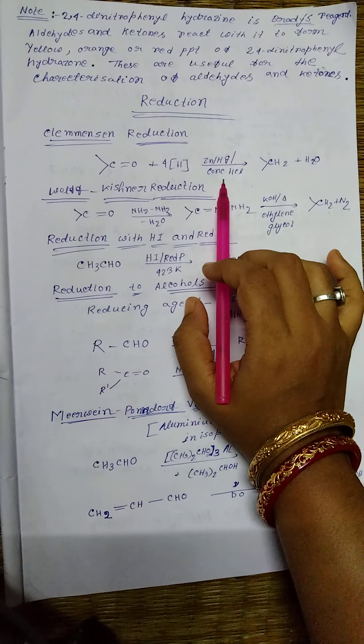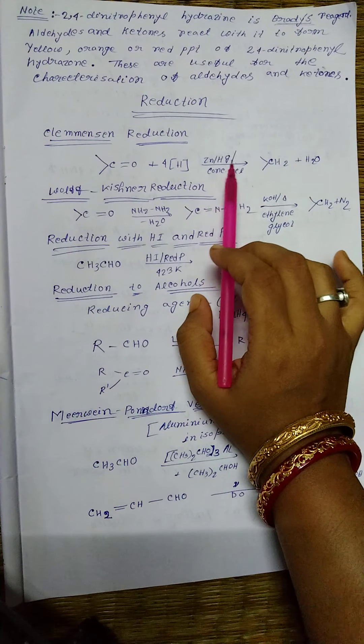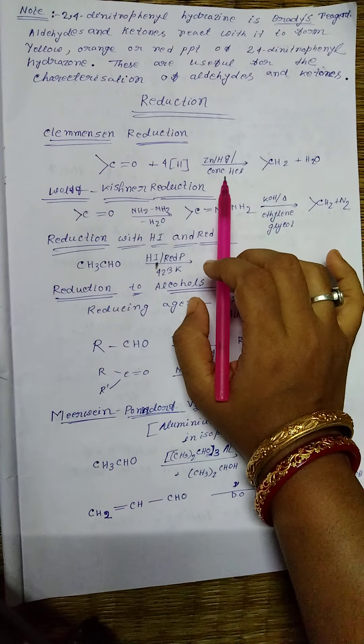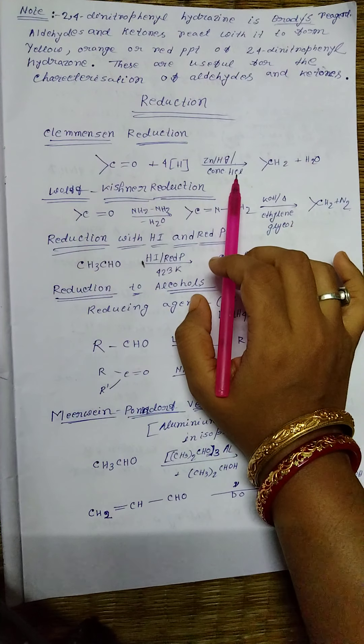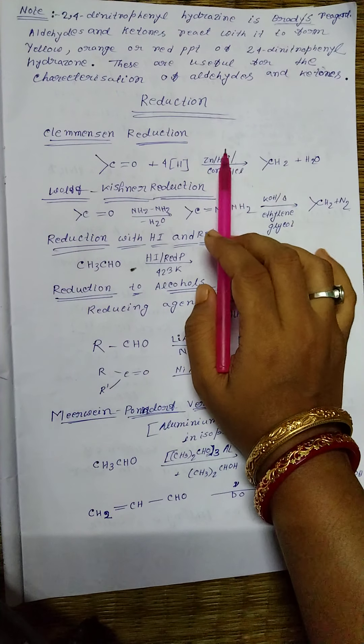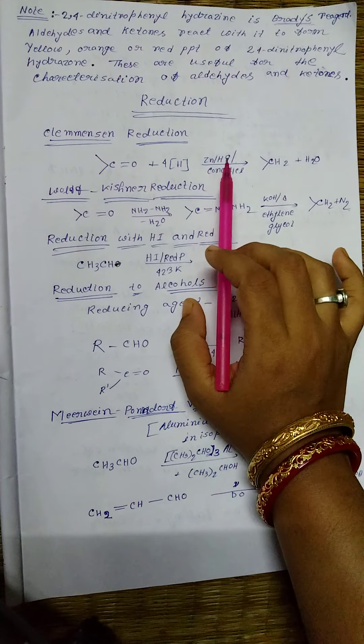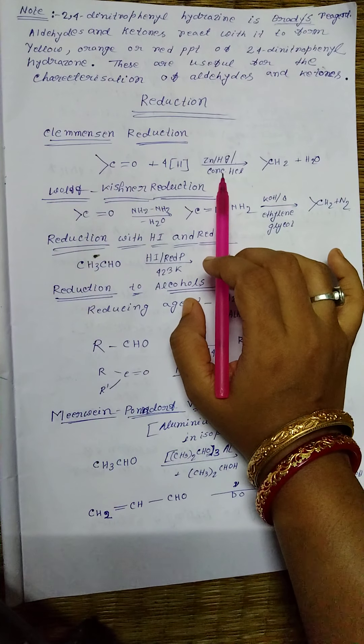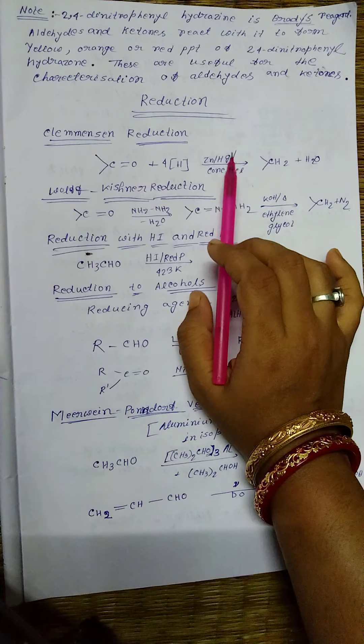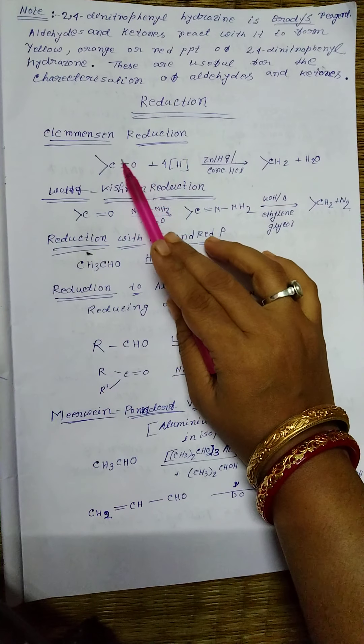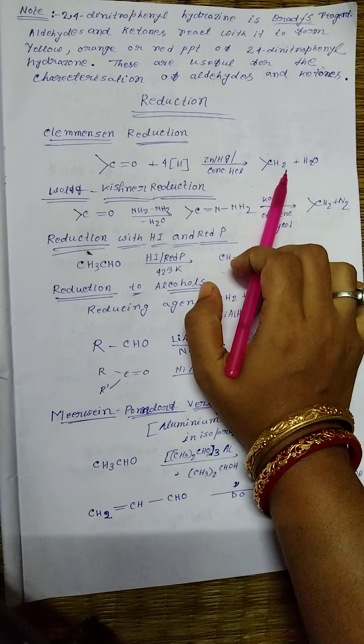The reagent used is zinc amalgam and concentrated HCl. So what is the reagent of Clemmensen reduction? Zinc amalgam and concentrated HCl. And you must remember that the C=O group is reduced to CH2 group.